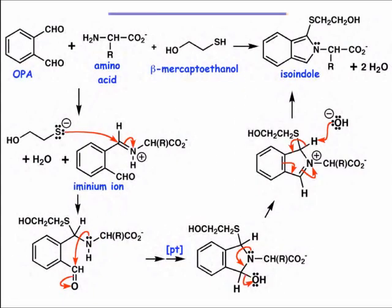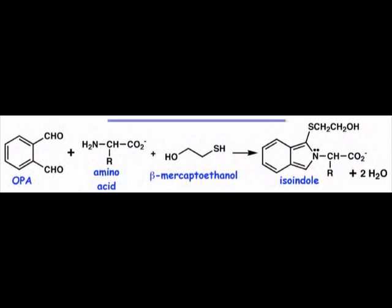Let's take a moment to examine the mechanism of isoindole formation from OPA and an amino acid, the tagging reaction. OPA's two aldehydes make it highly electrophilic, and nucleophilic attack by the amino group on an aldehyde carbonyl carbon is the first step of the mechanism.